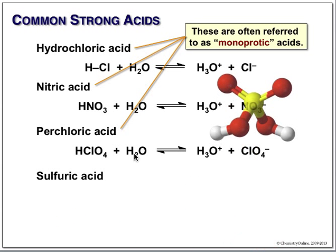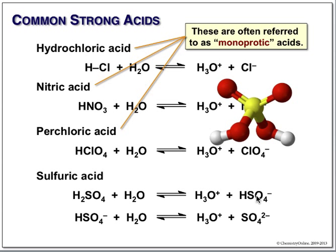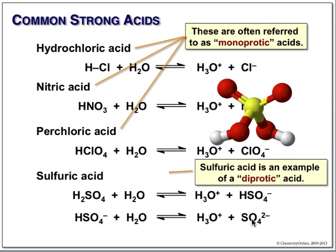Sulfuric acid is a classic example of a diprotic acid. Here we have two OH bonds. The first ionization gives us hydrogen sulfate, and the second one gives us the sulfate anion. Because we donate both of these hydrogens, we call this a diprotic acid.